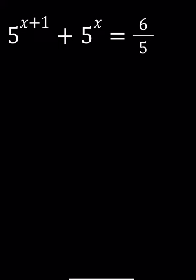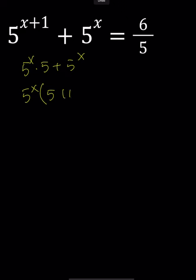First, we're going to write 5 to the power x plus 1 as 5 to the power x times 5, and then we'll factor out 5 to the power x. That's going to give us 5 plus 1 here, which is 6.